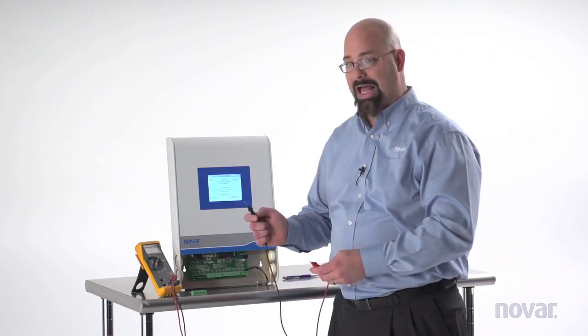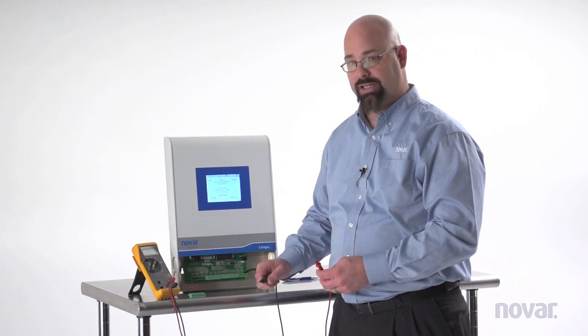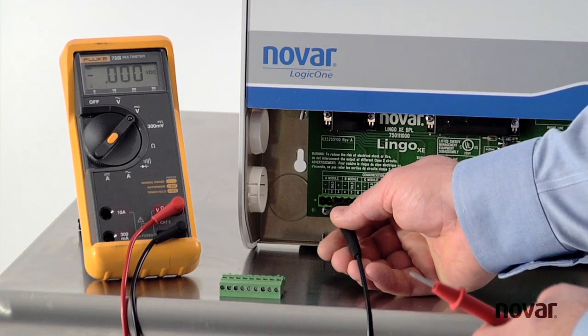I'm going to take my black lead of my meter. Once I place my meter on DC and put that on the shield terminal coming out of there.